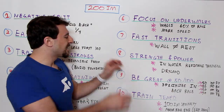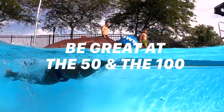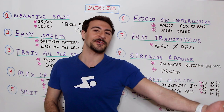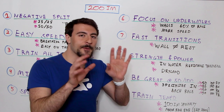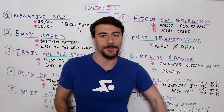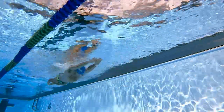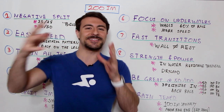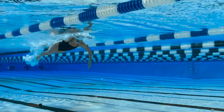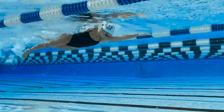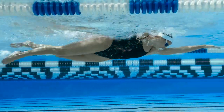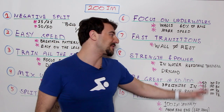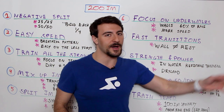Tip nine: be great at the 50 and 100 of each stroke. To be good at the 200 IM you need to focus on the 50 and 100 butterfly, backstroke, breaststroke, and freestyle. Compete in or train those specific events to go best times — it forces you to focus on details in each stroke. Look at any top 200 IMer and they are world-class in the 100 of every single stroke.